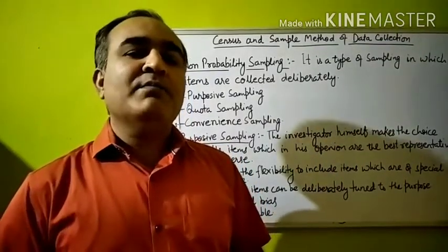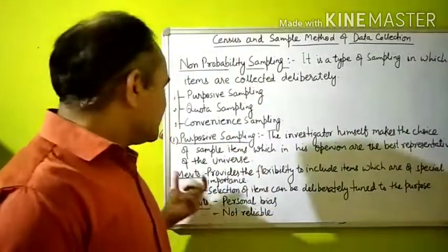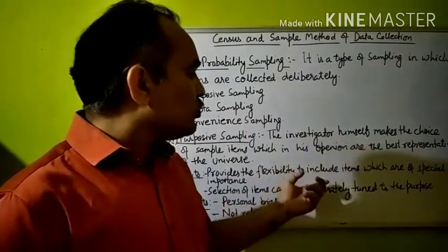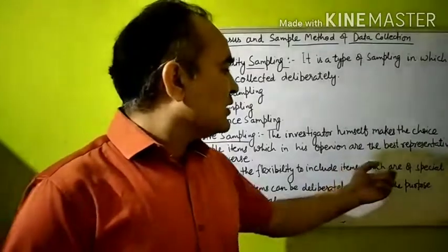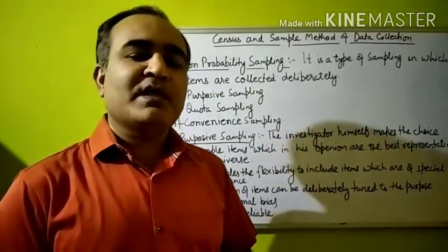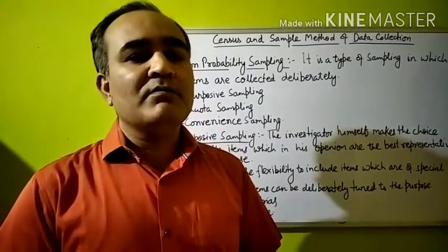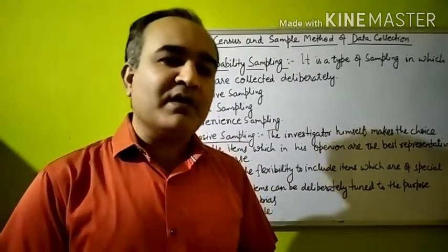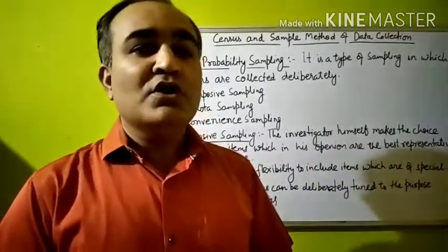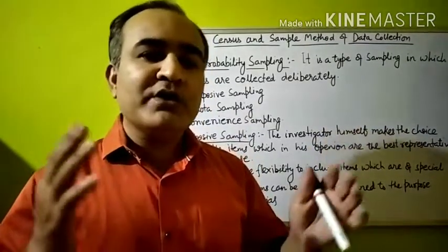Now let's see the merits and demerits. If we talk about merits, it provides the flexibility to include items which are of special importance or significance. This method gives us the freedom to pick those items and choose them as our sample which hold special importance in the whole universe.